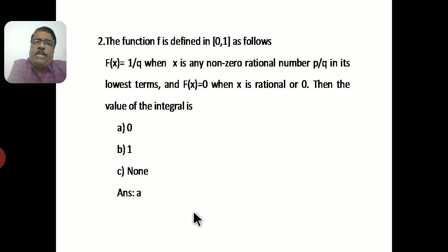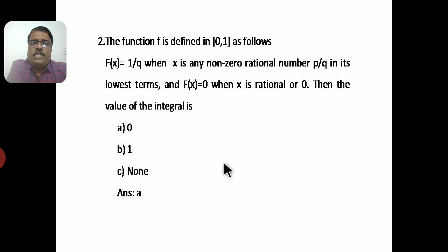Next, we have another problem. The function f is defined on [0, 1] as: f(x) = 1/q when x = p/q is a non-zero rational in lowest terms, and f(x) = 0 when x is irrational or 0. Then the value of the integral from 0 to 1 is — the answer is option A.